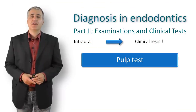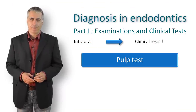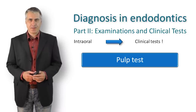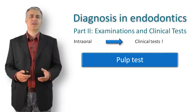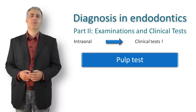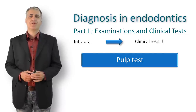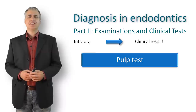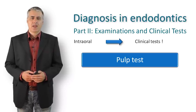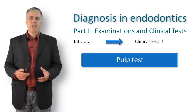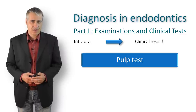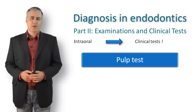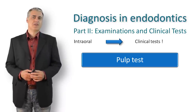Let us have a look at the clinical tests we can perform. The pulp test is an indirect method for determining the pulp condition and gives information about whether vital nerve cells are present. It gives no information about the vitality of the pulp because we cannot identify blood flow inside the pulp. Also, the findings with pulp tests do not have a good correlation to histology — a tooth may or may not respond to the pulp test even though it is still vital.